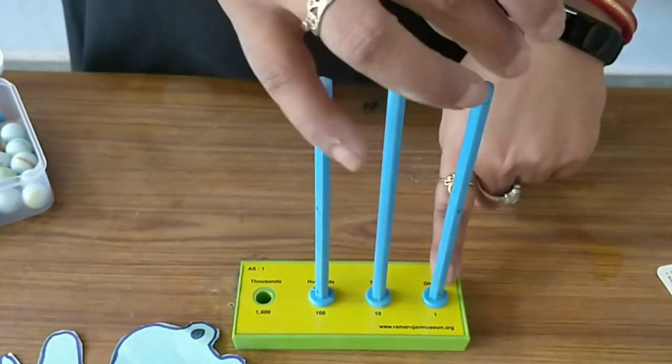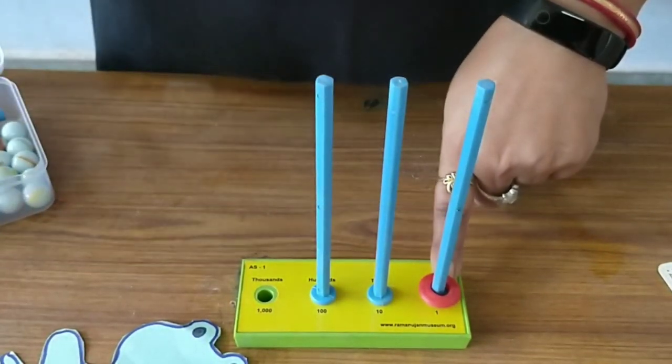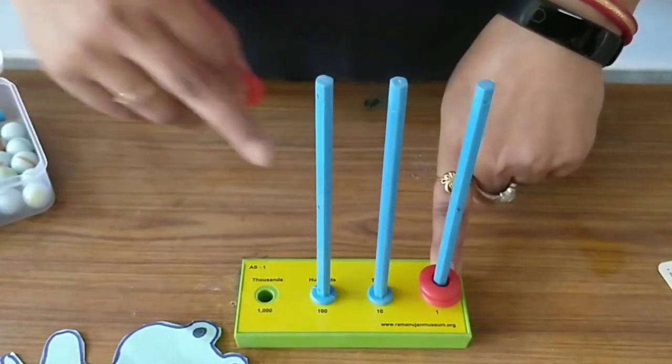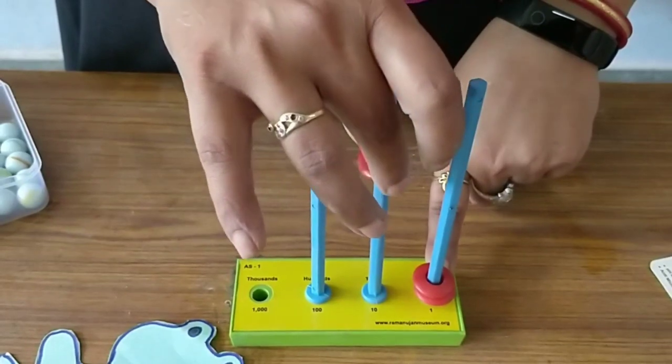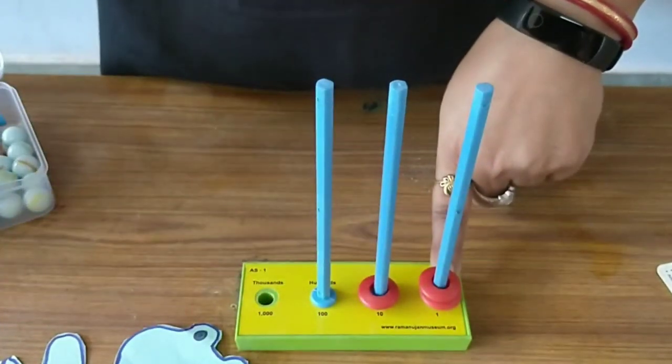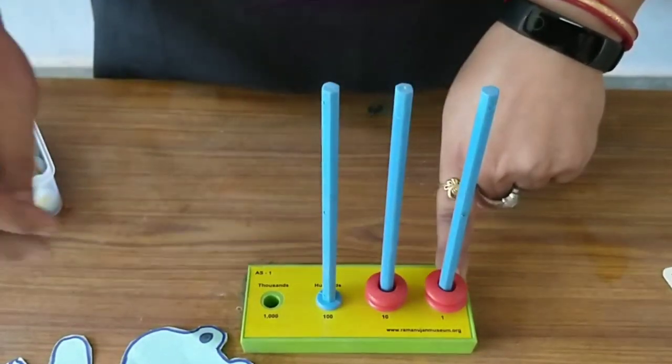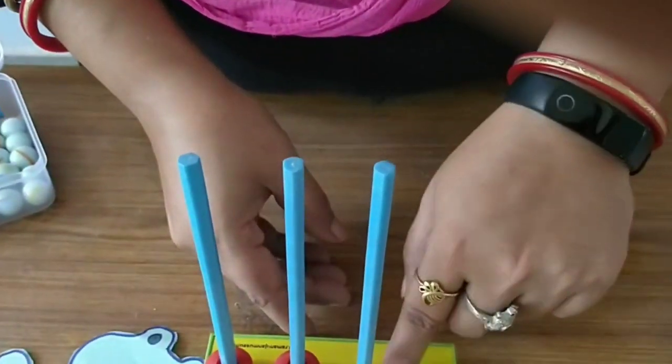So, if you put 1 bit on the ones place, it will be 1. If you put another bit, it will be 2. But, this is the tens place. If I will put 1 ring here, it will be 10. If I will put another bit, then it will be 20. And, this is the hundreds place. Here you can see, I have written 100.